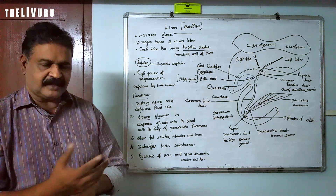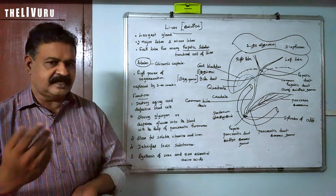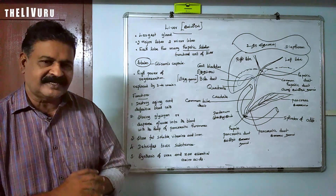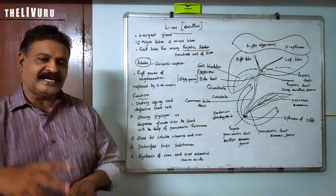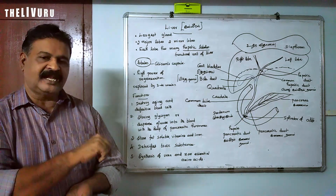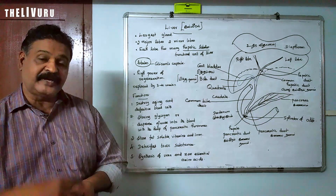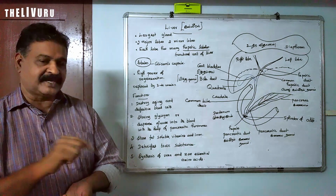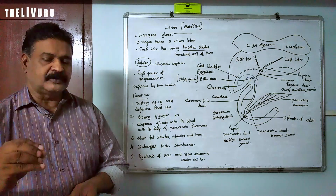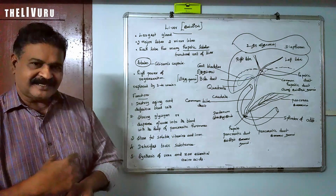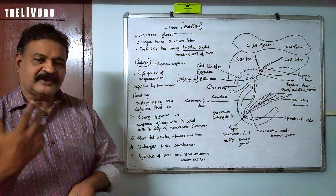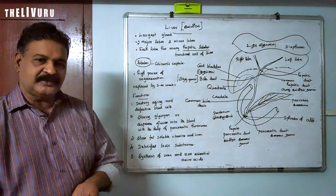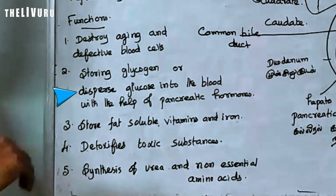When we eat carbohydrate food, after digestion the carbohydrate is converted into glucose. If we have excess glucose, it is converted into glycogen and stored in the liver. When glucose is needed, glycogen is converted back to glucose and dispersed into the blood with the help of pancreatic hormones.